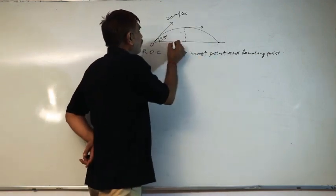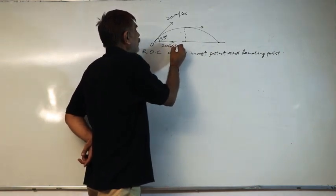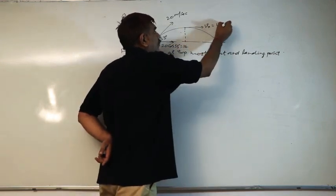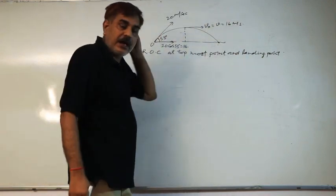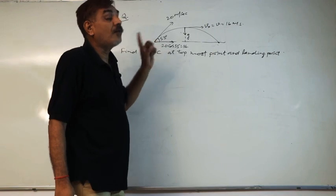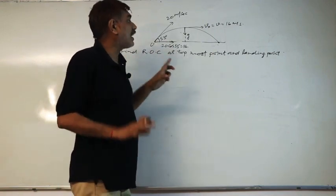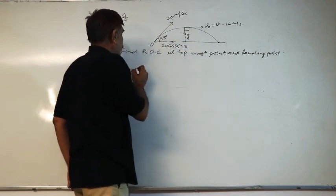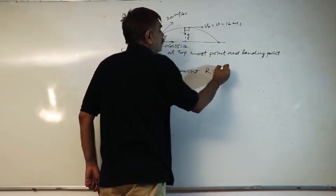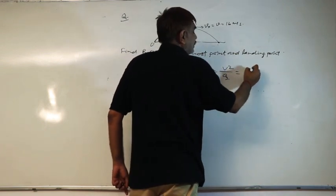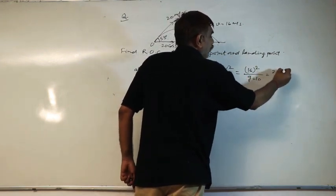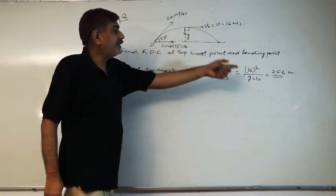At the topmost point, vertical velocity is zero and horizontal velocity remains constant: vx = 20 cos 53° = 20 × (4/5) = 16 m/s. The acceleration g acts vertically downward, and at the topmost point velocity and acceleration are perpendicular to each other (90°). So R = V² / a_perpendicular = 16² / g = 256 / 10 = 25.6 m. This is the radius of curvature at the topmost point.